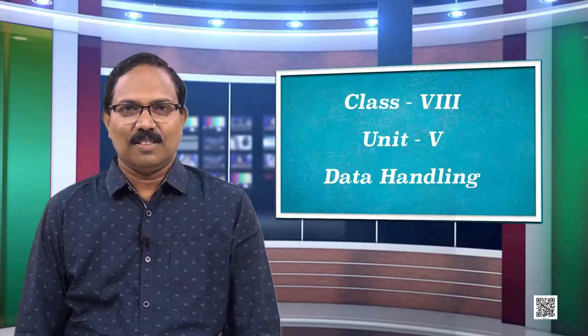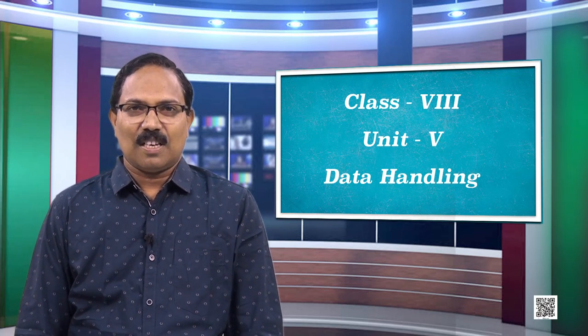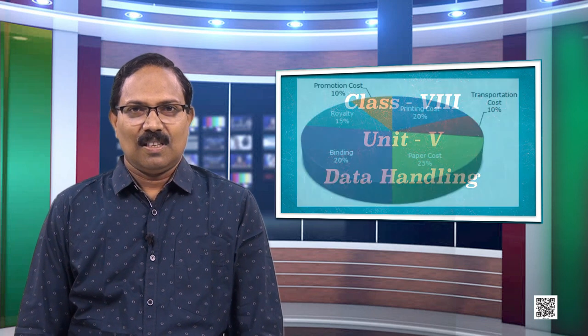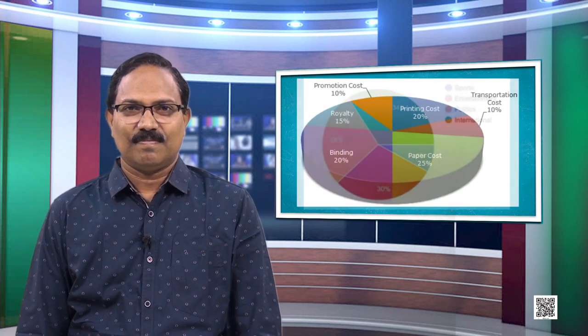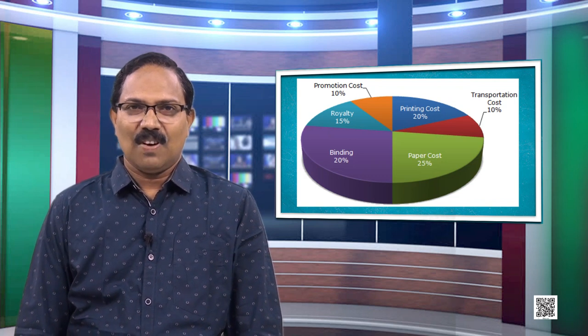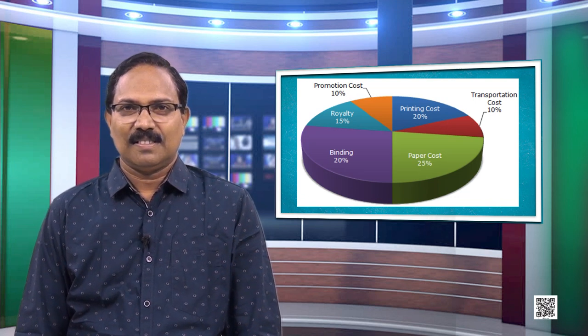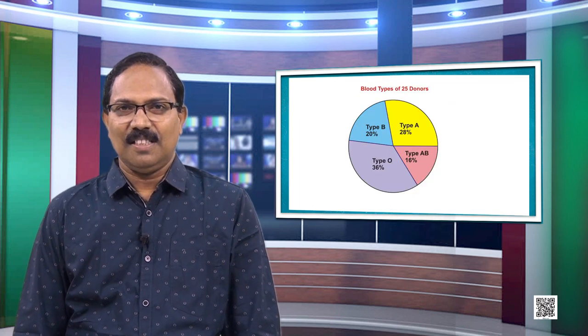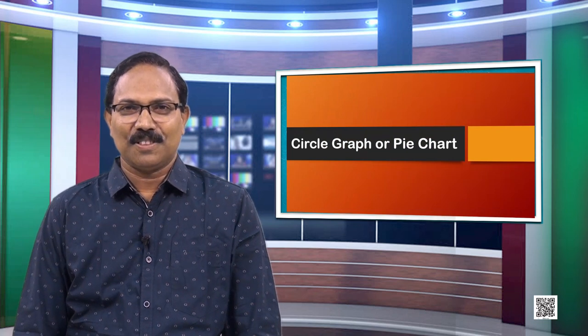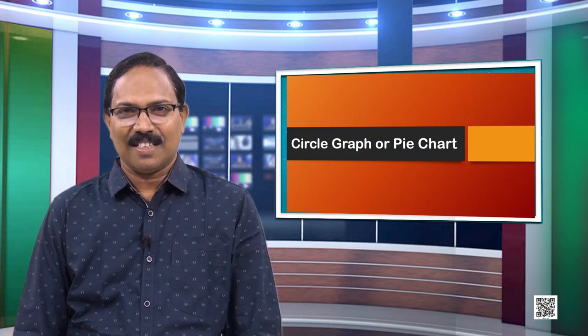Let us learn one more graphical representation of data. Look into these graphs — what type of graph is this? What is the shape? Circled. These are called circle graphs, or they can also be called pie charts. A pie chart or circle graph represents the relation between the whole and its parts.